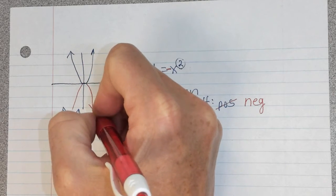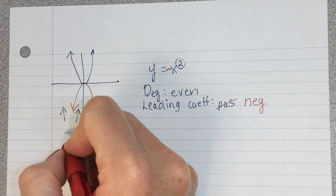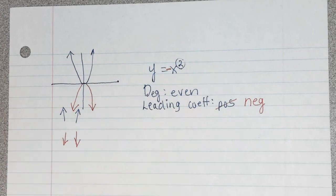So now it's going to look like this. So now we would say the end behavior is like that, right? It's opening down in both directions.